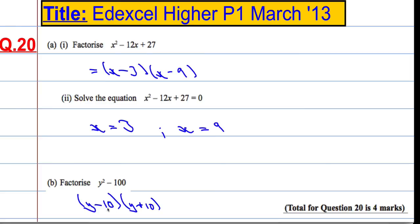y times y is y squared. y times plus 10 is 10y. minus 10 times y is minus 10y. They cancel out. And then minus 10 times plus 10 is minus 100. So do check your answers by expanding out in the exam.